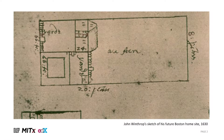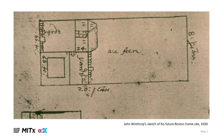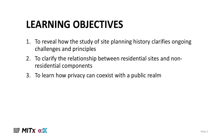In 1630, while sailing on the Arbella towards the city that would soon be established as Boston, English Puritan founder John Winthrop spent time sketching out his future home. He drew a simple house with front and side yards and an open space at the rear. Winthrop sought privacy and a degree of self-sufficiency, but he also viewed his plot as part of a community — a social experiment exposed to the world as a city upon a hill.